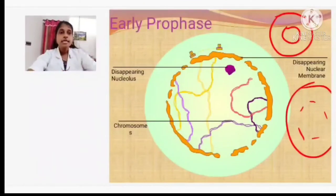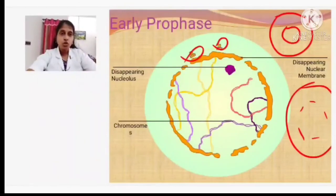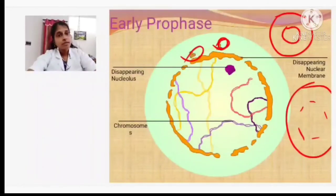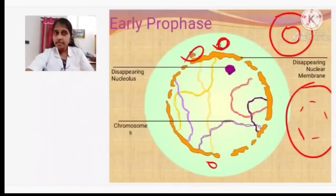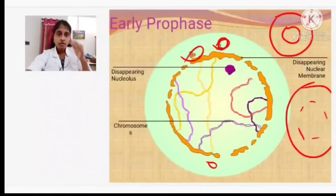The centrioles move towards the two ends of the cell. In the interphase, the chromosomes were present as a coiled chromatin network. Now in prophase, this chromatin network gets converted into rod-like condensed structures. The nucleolus, which was present inside the nucleus, also disappears during prophase.